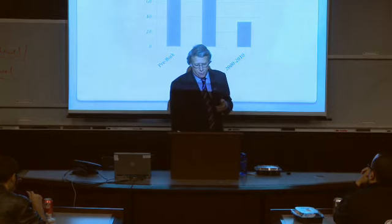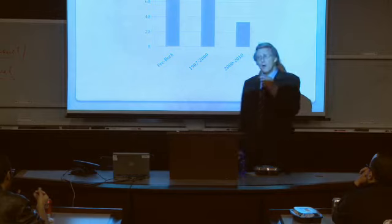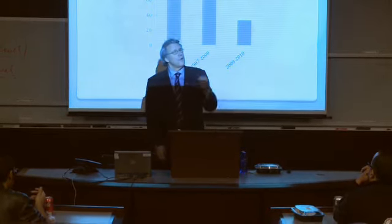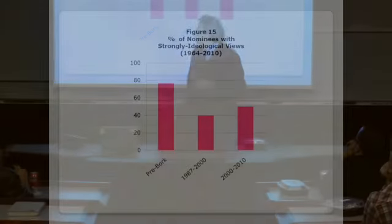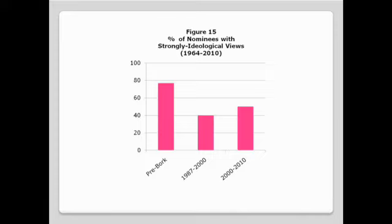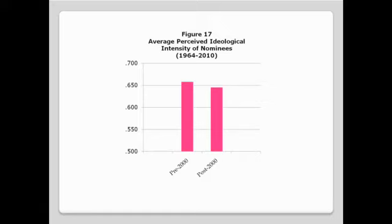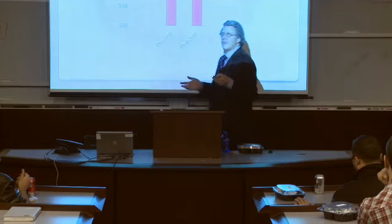The question then arises: why did this happen? What's going on post-2000 that really drove this dramatic change in the confirmation process? One possible explanation is that presidents put forth more highly ideological nominees post-2000. But as Figure 15 reveals, the sharp increase in negative voting after 2000 occurred even though President George W. Bush and Barack Obama nominated candidates who were on average no more ideological than those nominated between 1987 and 2000, and indeed less ideological than the average nominees in the pre-Bork era. So the much greater contentiousness post-2000 cannot be explained by the intensity of the ideology of the nominees.